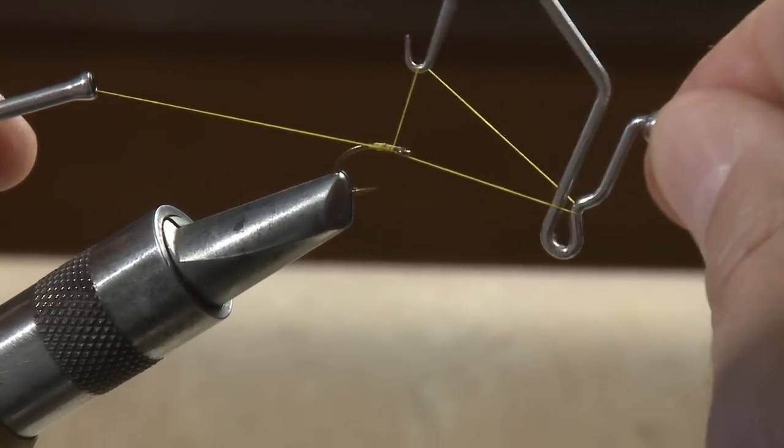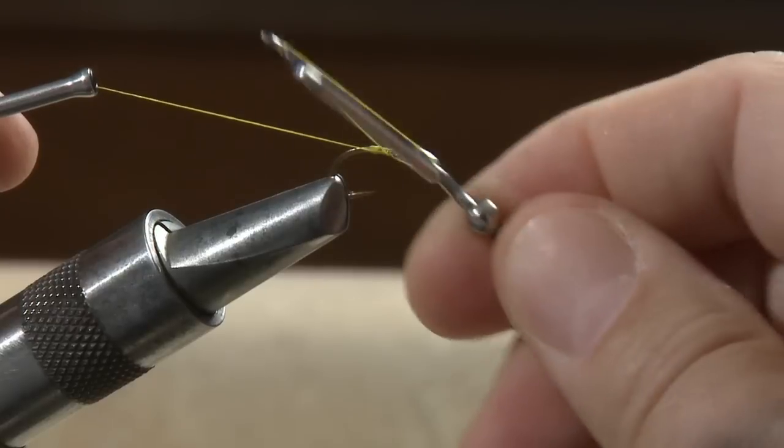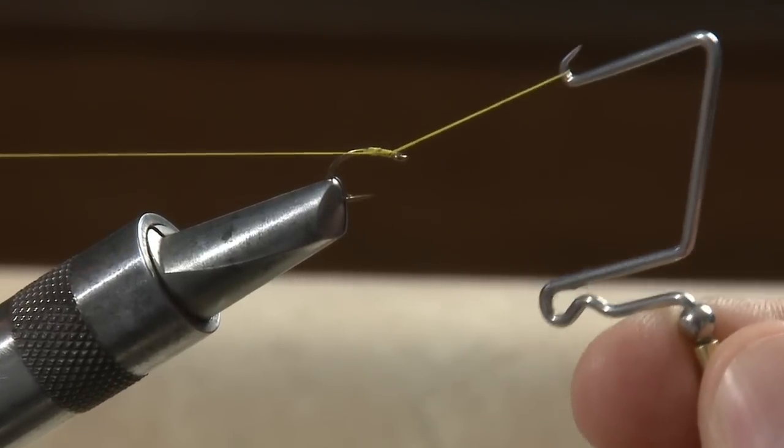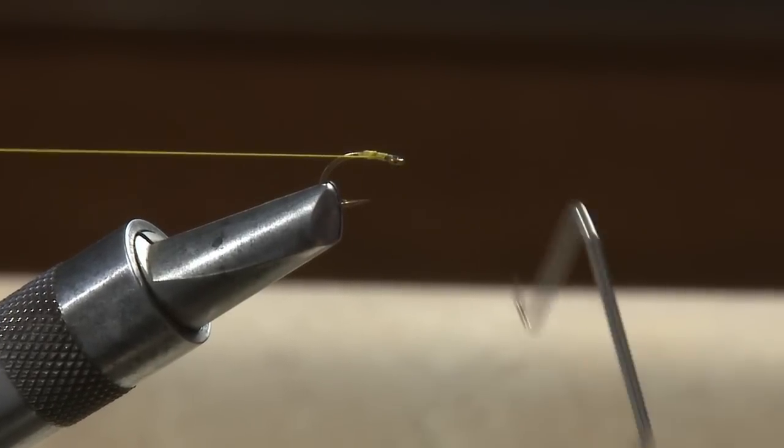Complete four to five turns, free the thread from the indent, draw the loop closed with your thread hand, and remove the hook.